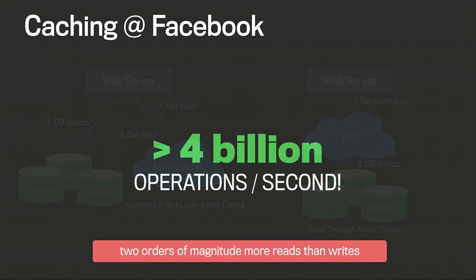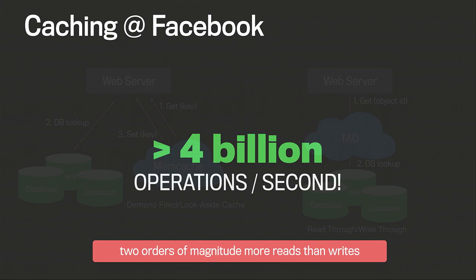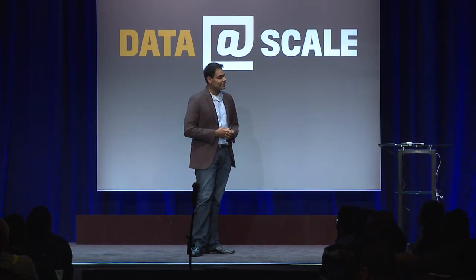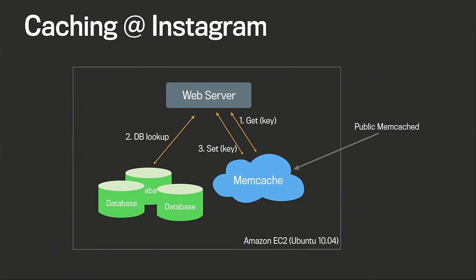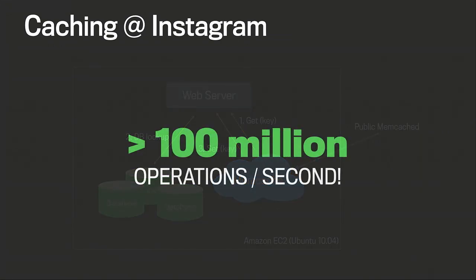At Facebook we see over four billion operations a second through our cache tier — that's a lot of small pieces of content. Instagram uses a similar demand-fill look-aside cache, but when Instagram first started using McRouter they were in Amazon EC2 using the public Memcached instance, which is probably very applicable for many of you in the audience. McRouter works in AWS, and Instagram does over a hundred million operations a second through their cache tier. All of Facebook and Instagram's cache operations go through McRouter.